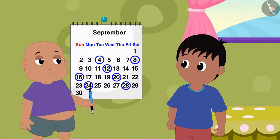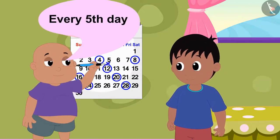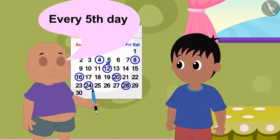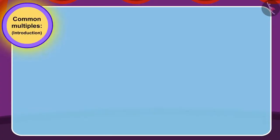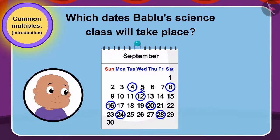Bablu told Raju that his science class would be every fifth day. Children, can you use multiples to tell on which dates Bablu's science class will take place?